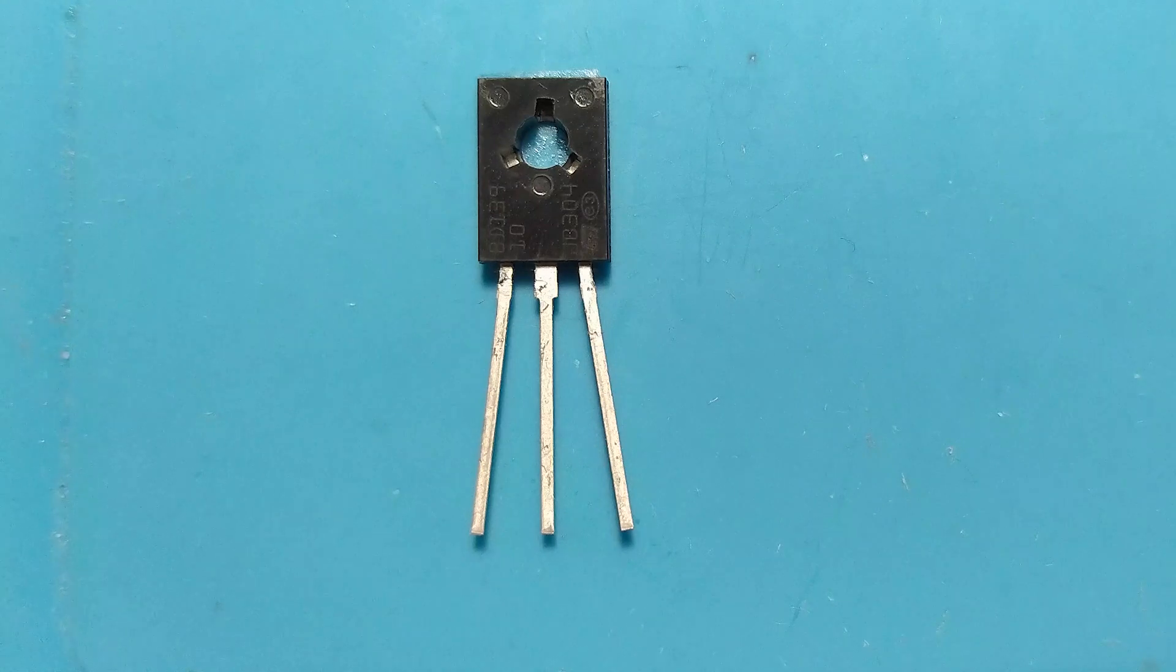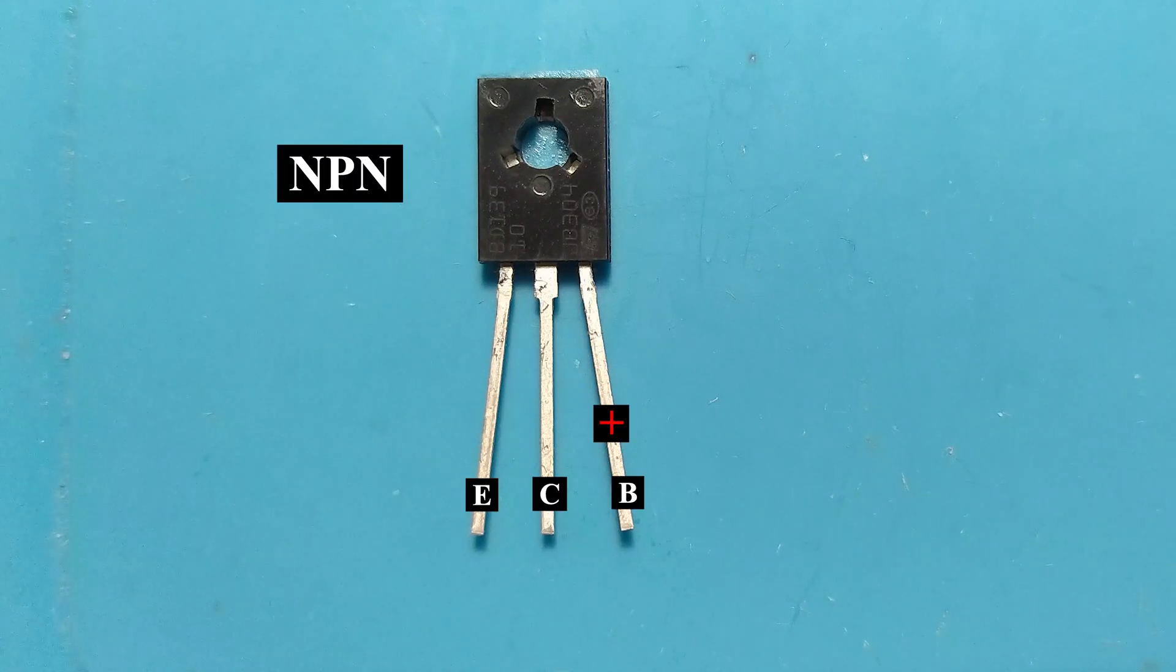From these measurements, we deduce that the BD139 transistor is of the NPN type, with plus on the base.